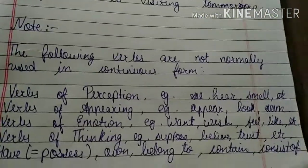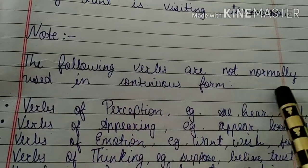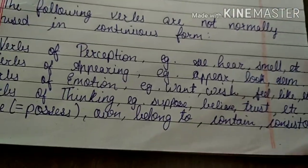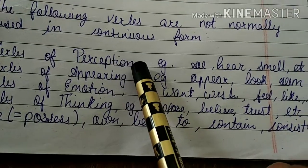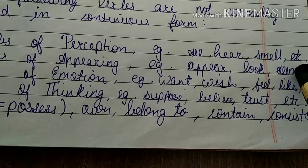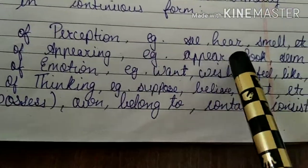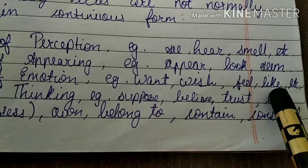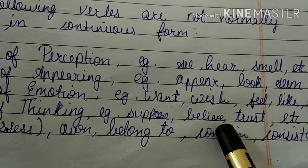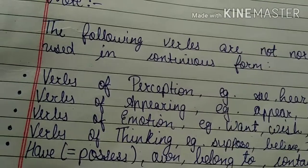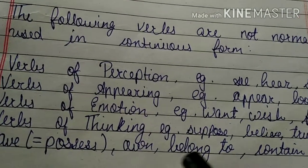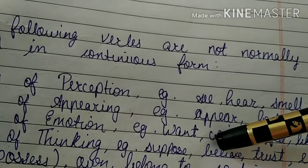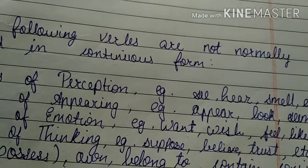There are some important notes. The following verbs are not normally used in continuous form: verbs of perception such as see, hear, smell, etc.; verbs of appearing such as appear, look, seem; verbs of emotion such as want, wish, feel, like, etc.; verbs of thinking such as suppose, believe, trust, etc.; and verbs of possession such as own, belong to, contain, consist of. These verbs are not normally used in the continuous tense.